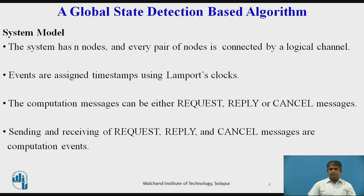When node i blocks on node j, node j becomes a successor of node i and node i becomes a predecessor of node j in the wait-for-graph. A reply message denotes the granting of a request. A node i unblocks when its P-out-of-Q request has been granted. When a node unblocks, it sends cancel messages to withdraw the remaining Q minus P requests it had sent. Sending and receiving of deadlock detection algorithm messages are algorithmic or control events.